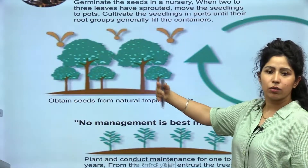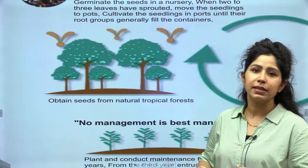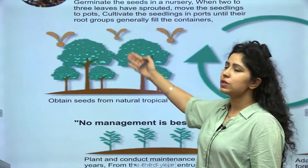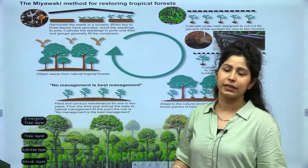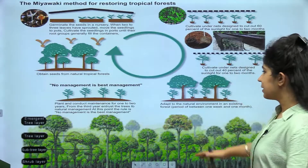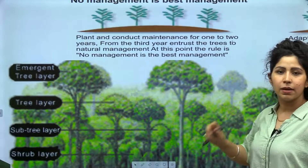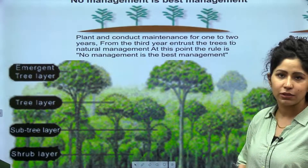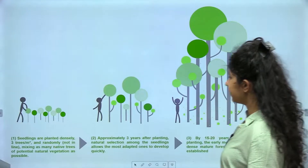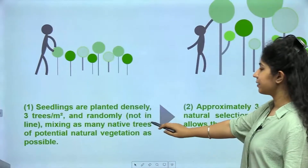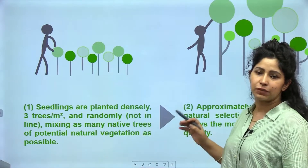After planting them in open land, you let them grow. The idea is to plant them so densely that they keep growing upwards and turn into a forest. The seeds from this forest can be used in the next cycle. Seedlings are planted densely and randomly, not in a line, mixing as many native trees of potential natural vegetation as possible.